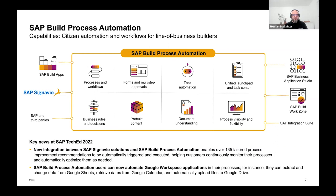When talking about processes, at some point you also need to enhance them with decisions and business rules. Think about policies within your company — coming from inside or outside — you need to maintain them and ensure you are working along your processes. This is also something you will be able to do with SAP Build Process Automation.